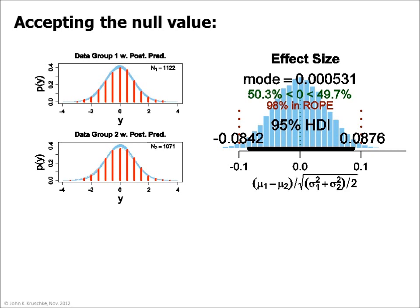An effect size of 0.1 is conventionally called small, so we might declare that effect sizes in the region are practically equivalent to zero. In general, for any given application, we can define a region of practical equivalence, or ROPE. When the 95% HDI falls completely within the ROPE, as it does here, we declare the roped value to be accepted. By contrast, NHST has no way of accepting the null hypothesis.